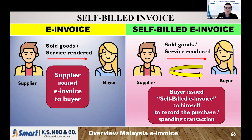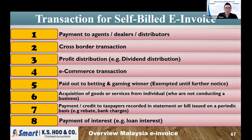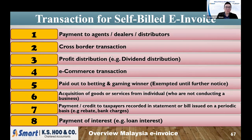What types of transactions fall under the self-billed e-invoice? For example: payment to agents, dealers, and distributors — these fall under self-bill. Numbers one to six, I will explain in detail in the following slides. Numbers seven and eight are normally referring to bank charges like loan interest from the bank or loan interest from others. All of these also need to be supported by a self-billed e-invoice.